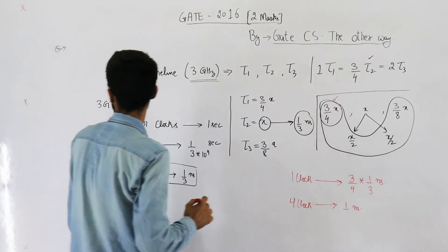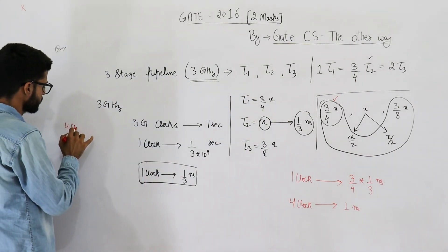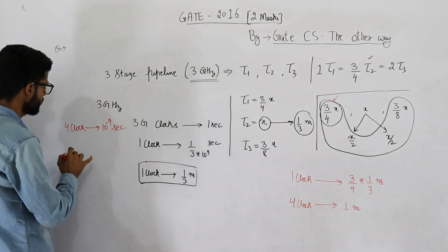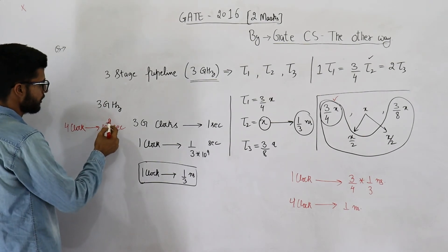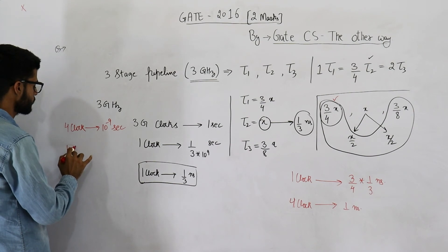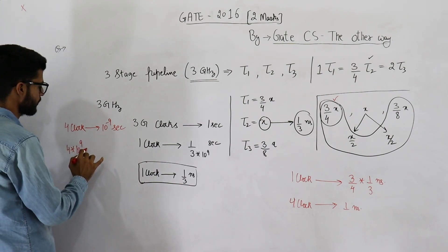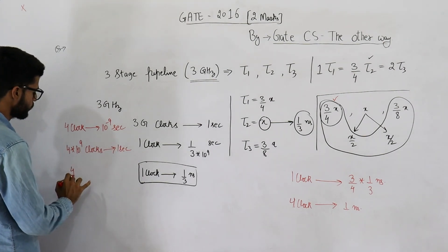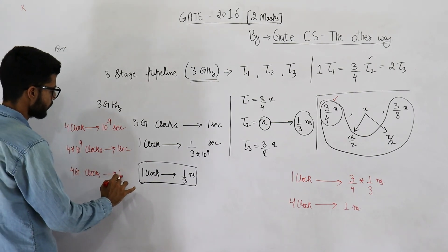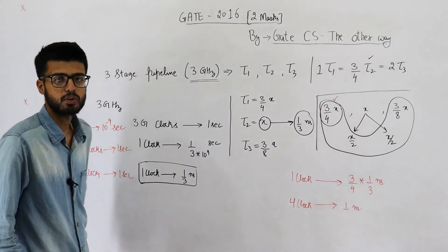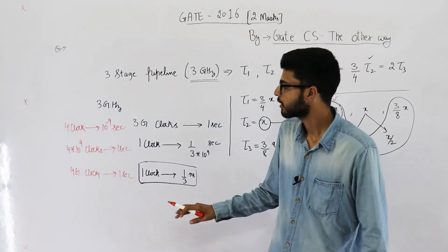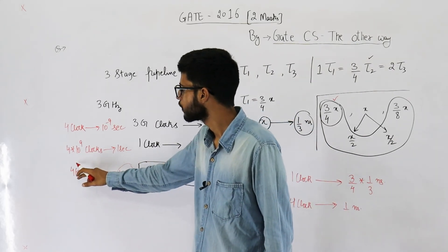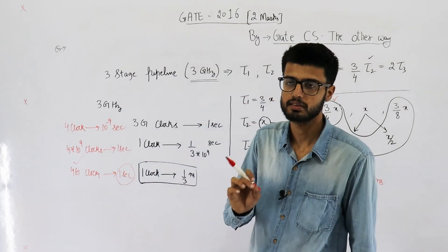Nanosecond means 10 raised to the power minus 9. So, 4 clocks require 10 raised to the power minus 9 second. That means this 10 raised to the power minus 9 when brought to this side will become 10 raised to the power plus 9. 4 into 10 raised to the power plus 9 clocks require 1 second. That means 4 giga clocks require 1 second. So, the frequency comes out to be 4 gigahertz. How did I get that? Hertz means number of clocks generated per second. And you have found out in 1 second you generate 4G clock. So, the frequency is 4 gigahertz.